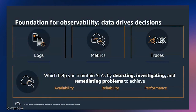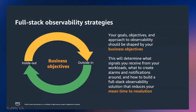Now that we have a good understanding of what observability is and why it's important, let's look at how to build an effective observability strategy. Your strategy should be shaped by your business objectives — your goals and approach to observability should be oriented around your business objectives or SLOs. This will help you determine what signals matter to reduce your MTTR and effectively build a full-stack observability solution.